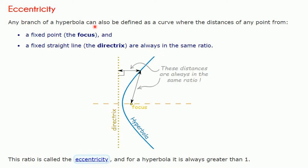Any branch of a hyperbola can also be defined as a curve where the distance from any point to the fixed focus and the fixed directrix always maintains the same ratio. For example, if you consider any point and measure the horizontal distance to the directrix and the inclined distance to the focus, this ratio remains constant throughout the curve. That ratio is the eccentricity, and for a hyperbola it is always greater than 1.